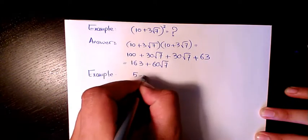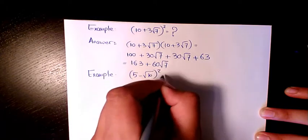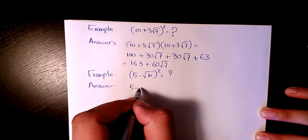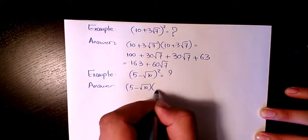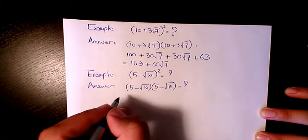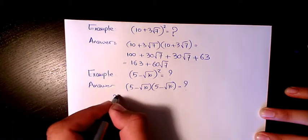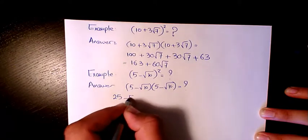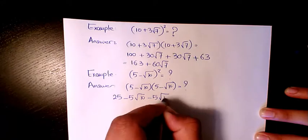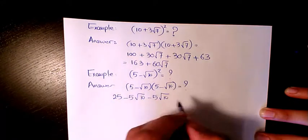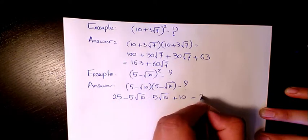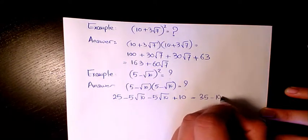Next example is (5 - √10)². The answer is (5 - √10) times (5 - √10). 5 times 5 is 25, 5 times negative √10 is negative 5√10, and then negative √10 times negative √10 is plus 10. That's going to make it 35 minus 10√10.